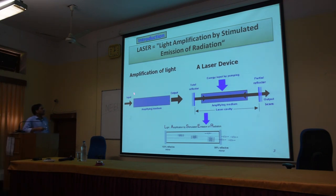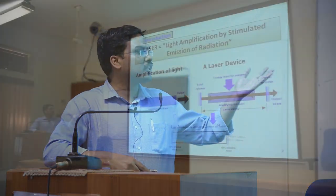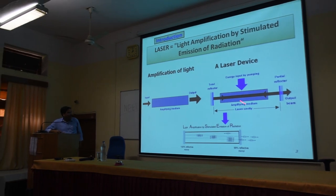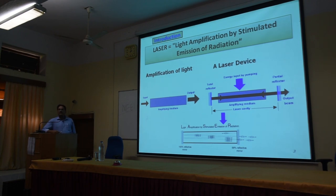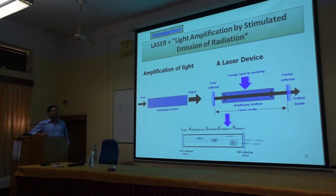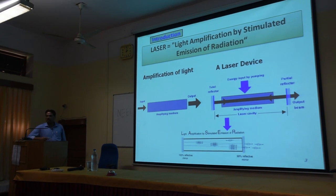This is the input and this is the output — a complete diagram of any laser. There are three main parts of any laser. One is pumping, which may be optical, electrical, or some other type. Pumping means providing energy to the active medium. The second part is the amplifying medium, also known as the active medium, which is the heart of any laser.